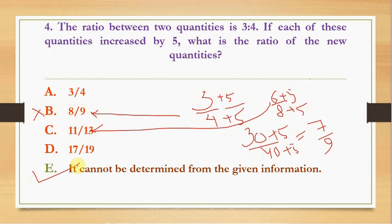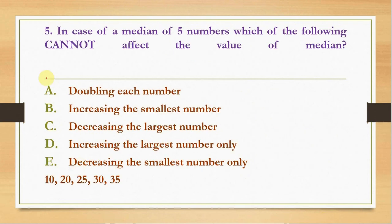Our last question is about median. In the case of median of five numbers, which of the following cannot affect the value of the median? To explain this I have taken a simple example here: five numbers which are arranged in ascending order and the median number is 25. Now take the first option, doubling each number.